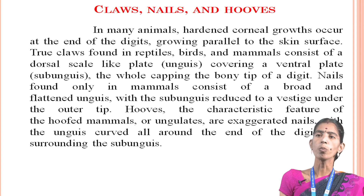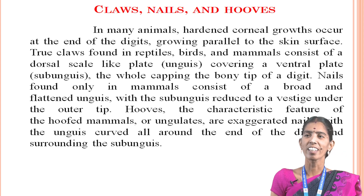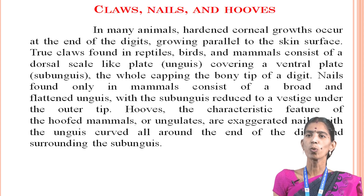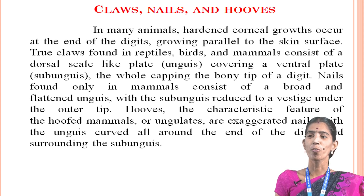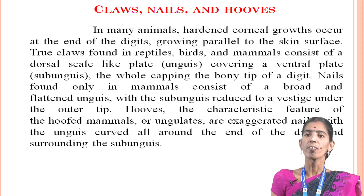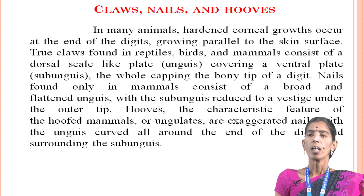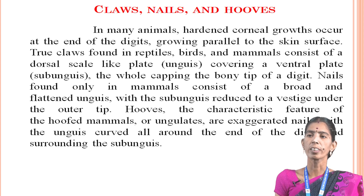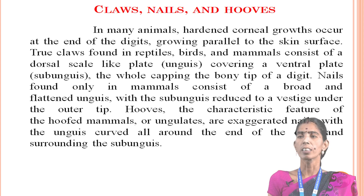Then claws, nails and hooves. In many mammals, corneal growths occur at the end of the digit, moving parallel to the skin surface. The nail, found only in mammals, consists of a broad and flattened claw with the sub-unguis reduced to a vestige under the outer nail. Hooves, characteristic of hoofed mammals, are enlarged or exaggerated nails with the unguis curved all around the end of the digit and surrounding the sub-unguis.